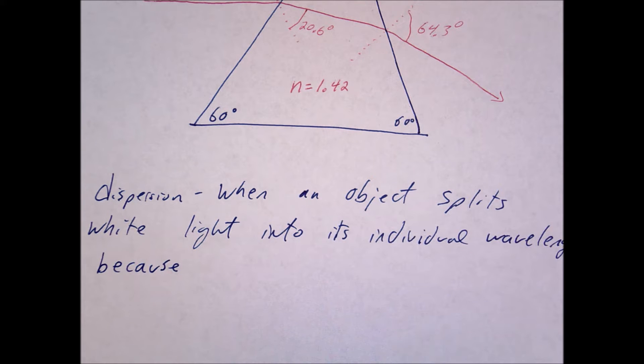Well the reason is the index of refraction is not constant. Even though we've been saying it's constant up to this point, the index is actually not constant. It's dependent on the wavelength.